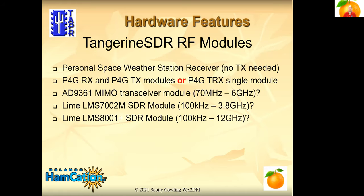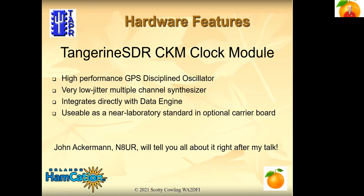Future RF modules: the Personal Space Weather Station Receiver is the first one we're going to build — just a receiver. Then we're talking about many different RF modules to support the multitude of LSI receiver and transceiver modules coming from Lime Semiconductor and from Analog Devices. Next up, we have the clock module. It was designed as a separate plug-in board so we could offer a basic clock system at an inexpensive price, or work up to a GPS-disciplined oscillator at a more substantial price point. We're going to start with a GPS-disciplined oscillator, and John Ackerman is going to talk about the GPSDO clock module right after me.